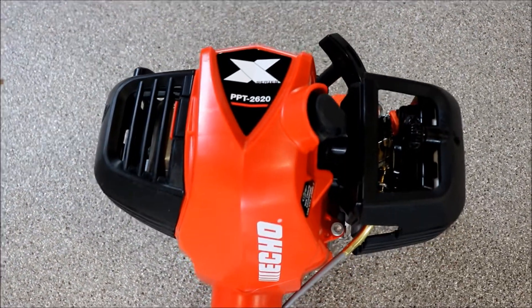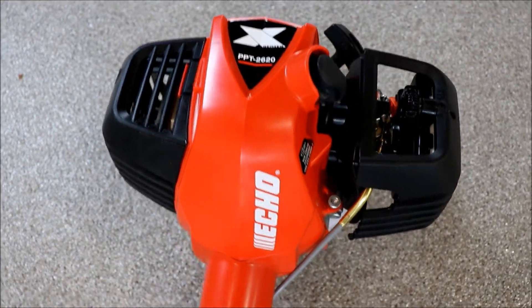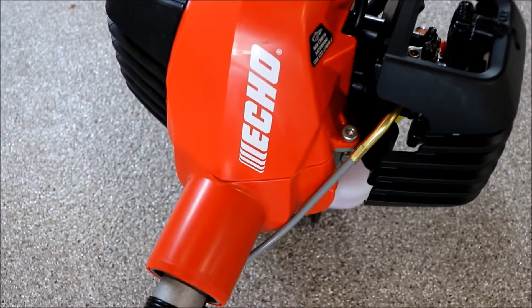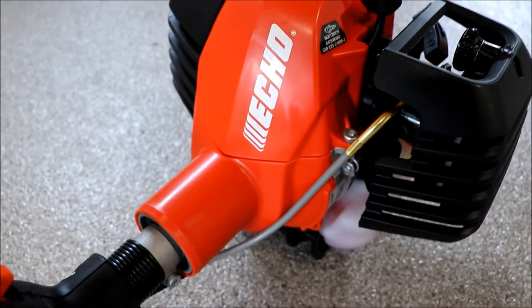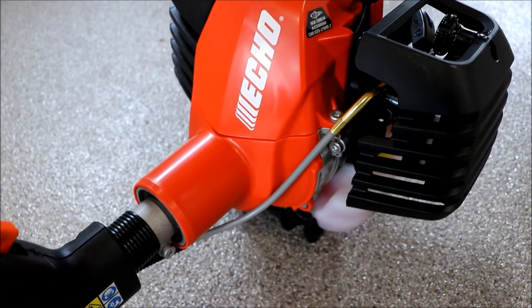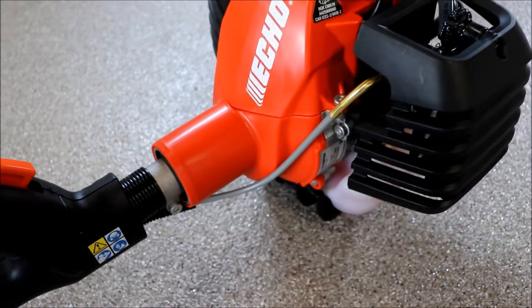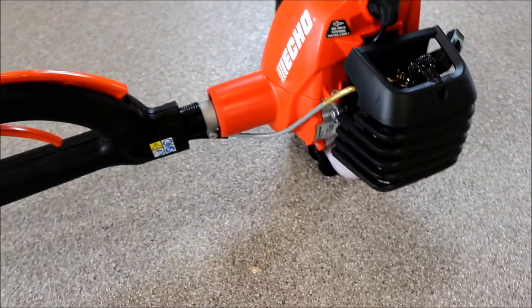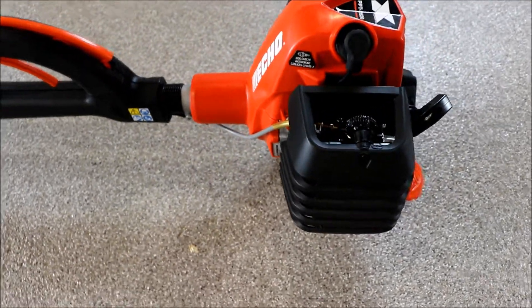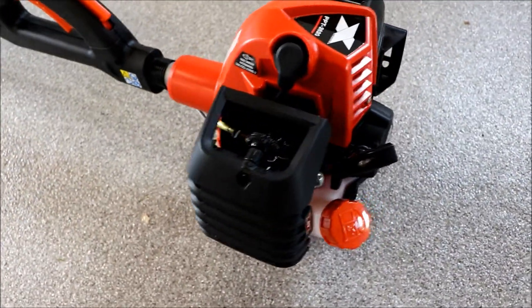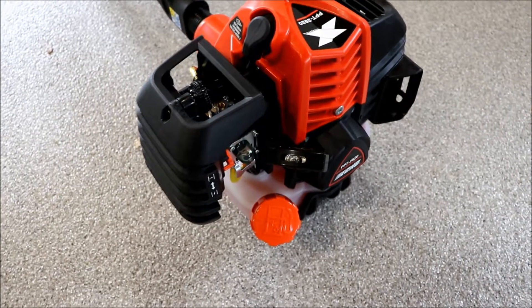All right, so we'll take a look at the engine. So this is a, I believe it's 25 cc. It is a 50 to 1 mix. I only use the ECHO fuel that comes in a can. It's just easier. Don't have to mix it. Don't have to worry about it going bad. And it seems to run really well on that.